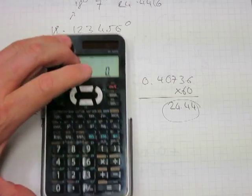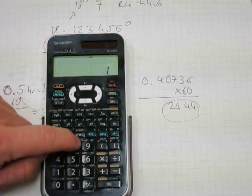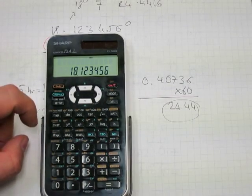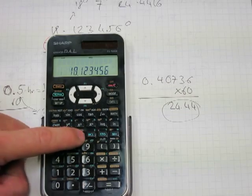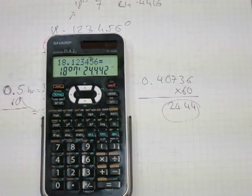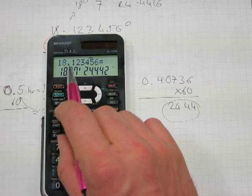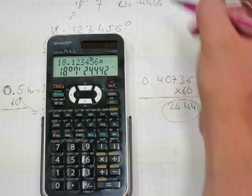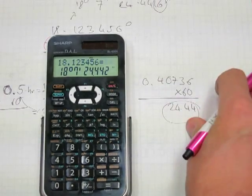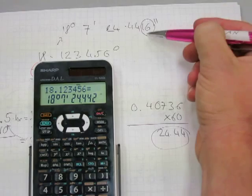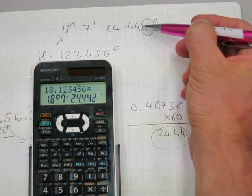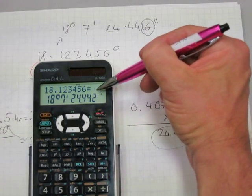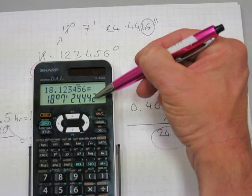And on a calculator, this is how it plays out. You enter 18.123456 and press second function DMS, and there you have it: 18 degrees 7 minutes 24.442. Now the calculator doesn't have enough decimal digits, so the calculator rounded up that 16 for the thousandth place value, just rounded it up to a 2 here for the thousandth place value.